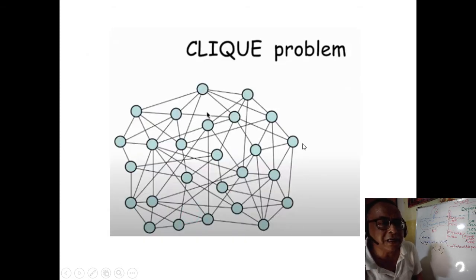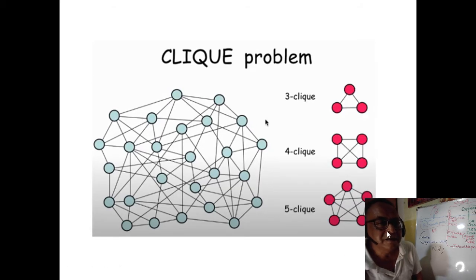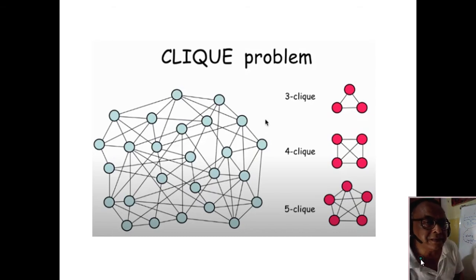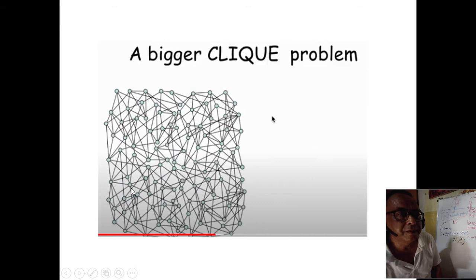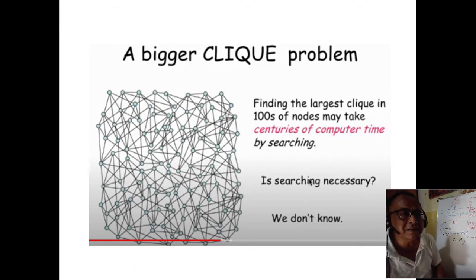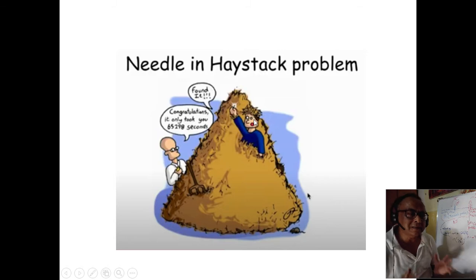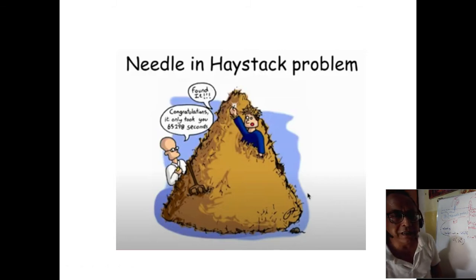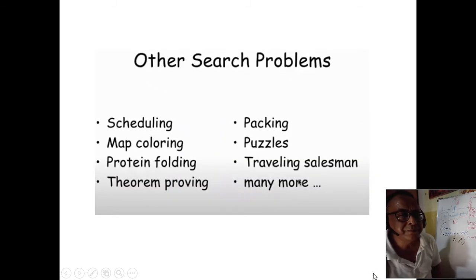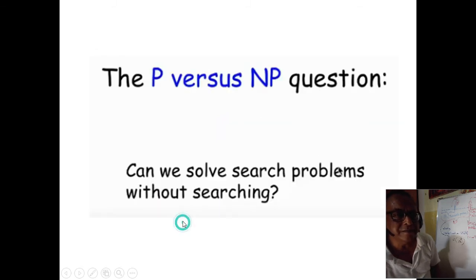This is the clique problem. These three nodes are connected — that is a 3-clique. This is a 4-clique. This is a 5-clique. You have to find what is the maximum clique size. This is an NP-complete problem. Finding a bigger clique in a graph with 100 nodes takes a huge amount of time — it looks simple but it is not. Like a needle-in-a-haystack problem — our algorithm needs to be smart enough.